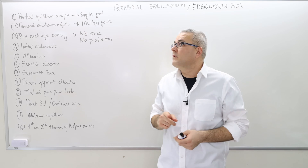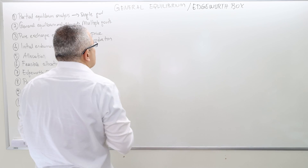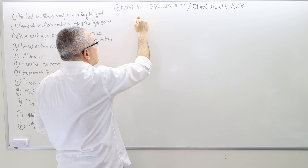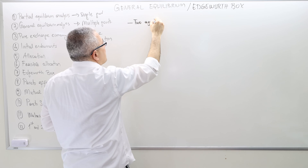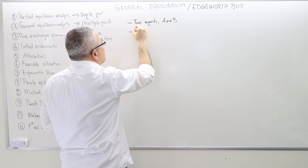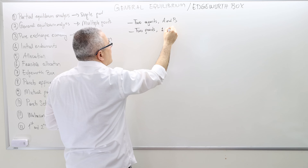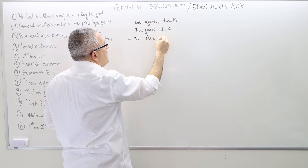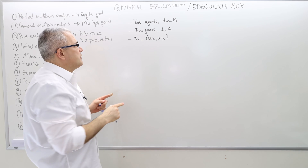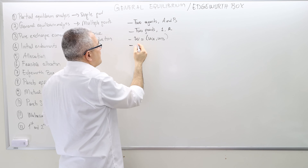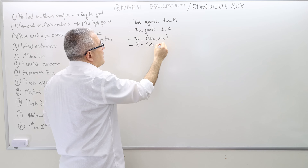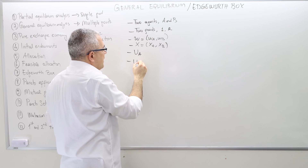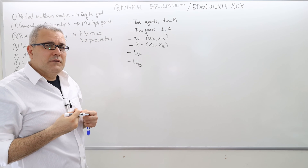In this video, let's talk about Edgeworth boxes. Before going through Edgeworth boxes, let's remember the model-specific assumptions we had in general equilibrium. We had two agents — call them A and B — and two goods, good one and good two. We have the initial endowment vectors w_A and w_B, indicating how many units of good one and good two each agent brings. We also have the allocations x — how many of each good the agents consume.